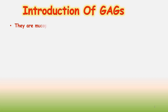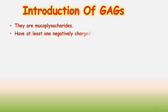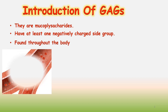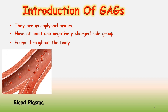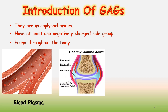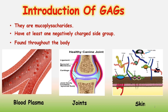First of all we will discuss the introduction of GAGs. They are also known as mucopolysaccharides and they have at least one negatively charged side group. They are found throughout the body, such as in blood plasma, joint and skin.